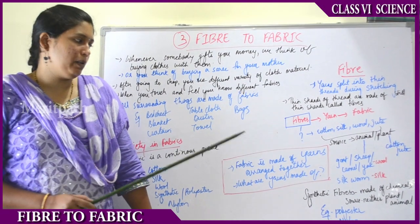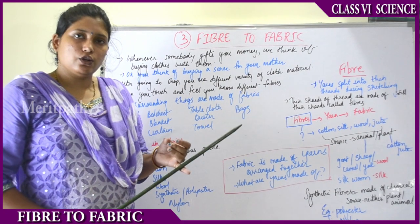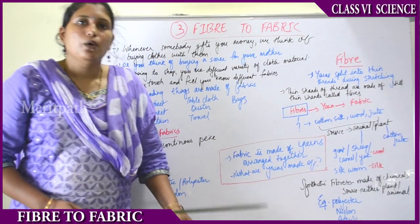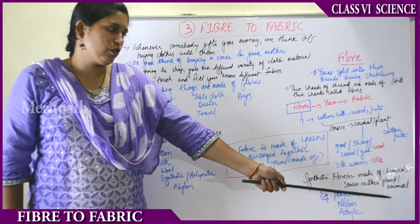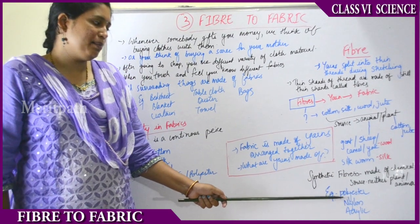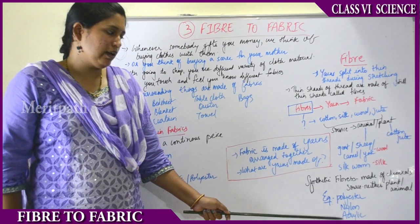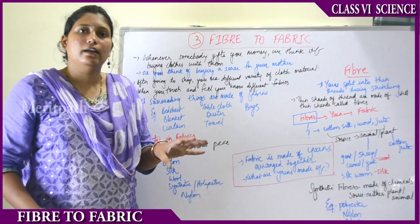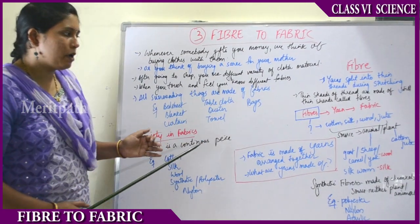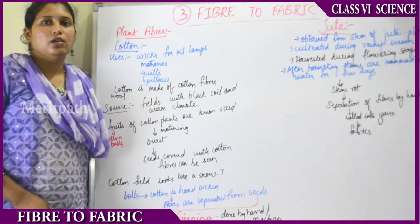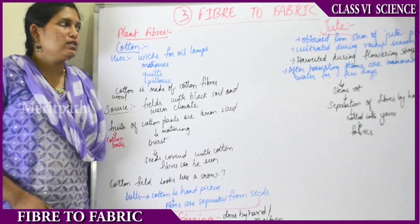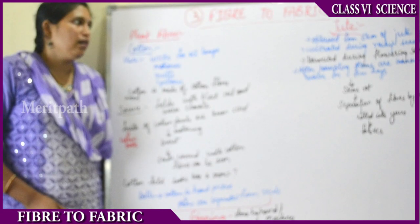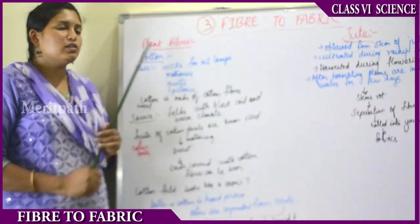Silk is extracted from an insect called the silkworm. So fibers are of different types and sourced from either animals or plants. Other than these, we have synthetic fibers which are made up of chemicals — neither sourced from plant nor animal. Examples of synthetic fibers are polyester, nylon, and acrylic. Our uniforms are usually made up of polyester material, a mixture of two or three fibers — not 100% cotton.